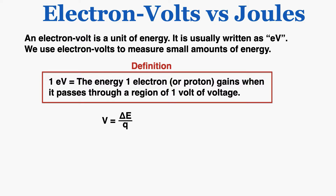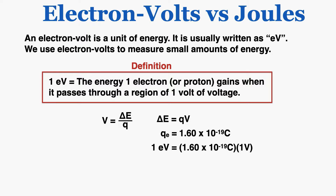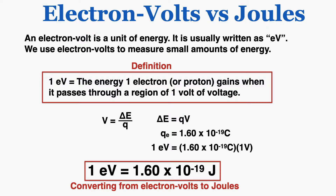Because voltage is equal to the change in energy over the charge, I can rearrange this equation to find the change in energy. I know that the charge of an electron is 1.60 times 10 to the negative 19th coulombs. So because one electron volt is the energy that one electron gains when it passes through one volt, one electron volt equals 1.60 times 10 to the negative 19th coulombs multiplied by one volt. That gives an answer in joules, so one electron volt equals 1.60 times 10 to the negative 19th joules.